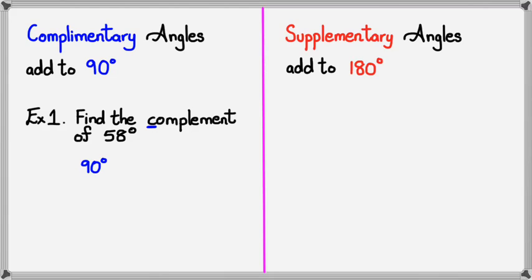because it's complementary, we do 90 minus 58 degrees, and that's 32 degrees. That's basically it. So we can say 32 degrees is the complement of 58 degrees, or you can say 32 and 58 are complementary angles.